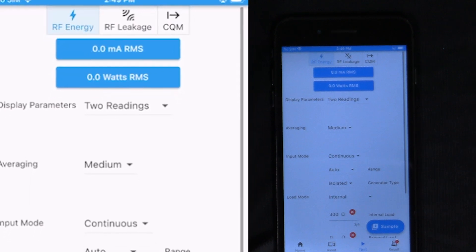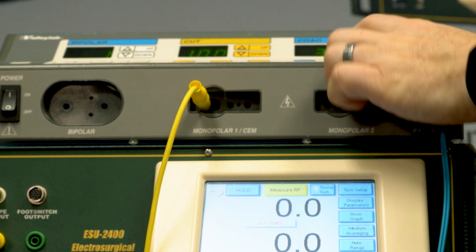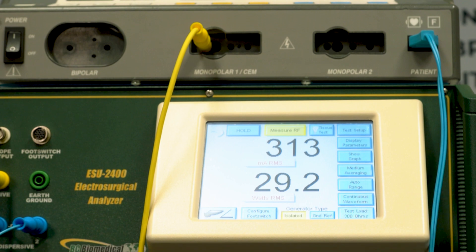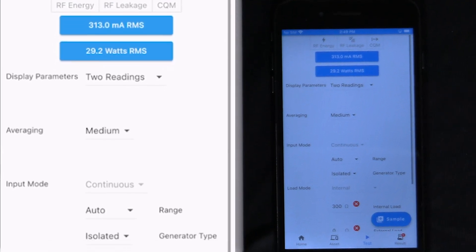If I need to make additional readings, let's say measuring coag, I can do that here. Set the power level, press the coag button and my measurement will show on MyBC Mobile. Press sample and now that's stored.